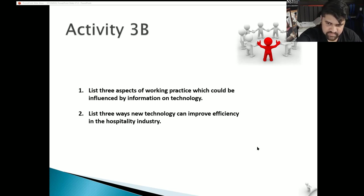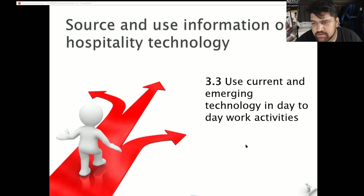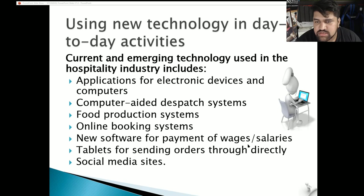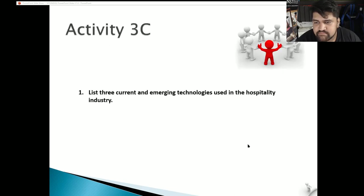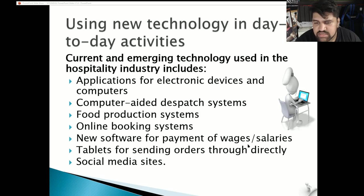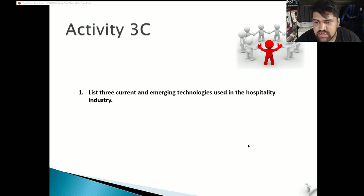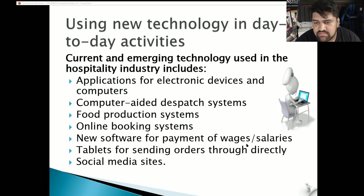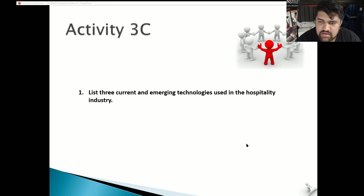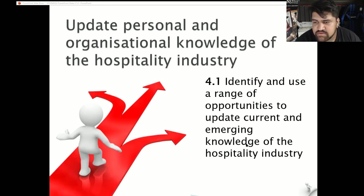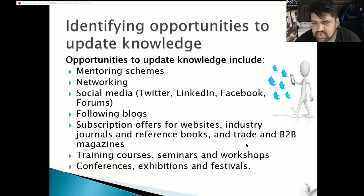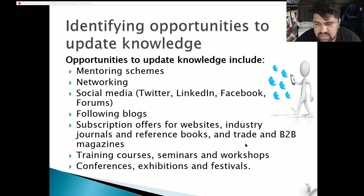3.3: use current and emerging technologies in day-to-day work activities. Current and emerging technologies used in the hospitality industry include electronic devices, dispatch systems, and social media. List three current and emerging technologies used in the industry — for example, tablets, software, and social media websites like Facebook and Instagram. 4.1: identify and use a range of opportunities to update current and emerging knowledge of the hospitality industry, such as mentoring schemes, networking, using social media, following blogs, subscribing to websites and magazines, and taking part in training, seminars, workshops, conferences, exhibitions, and festivals.